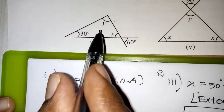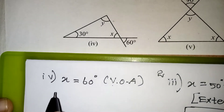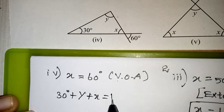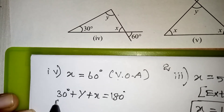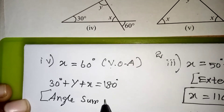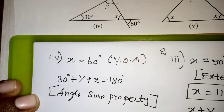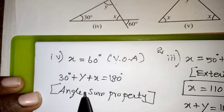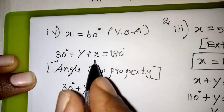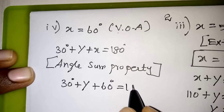Now, after finding x value, we need to find the y value. When we add all three angles of a triangle, it is 180 degree. So, 30 degree plus y plus x will be 180 degree. The reason is the angle sum property of a triangle — when we add all three angles, it will be 180 degree. In the place of x, substitute 60: 30 degree plus y plus 60 degree equals 180.